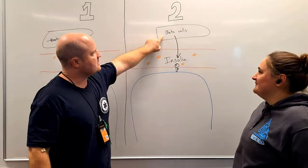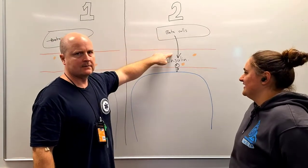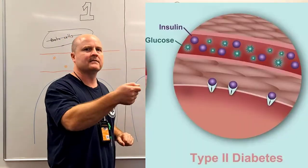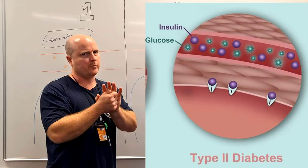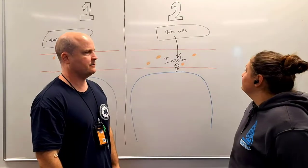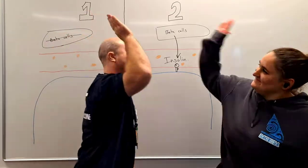When our beta cells of our pancreas release insulin, the key tries to go in the lock, but now the cell doesn't let the door open for glucose to go in. So that's insulin resistance. Frickin' nailed it.